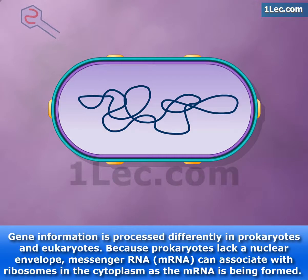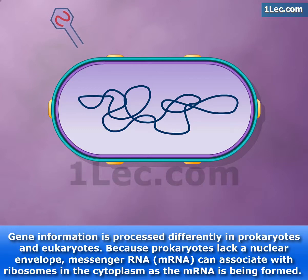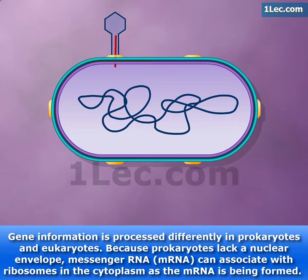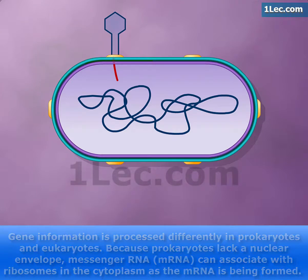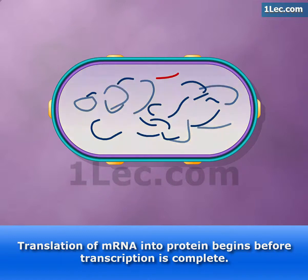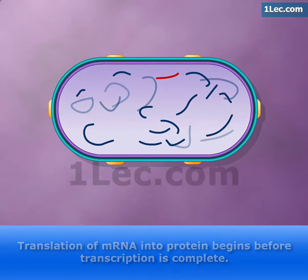In generalized transduction, a segment of DNA is carried from one bacterial cell to another by a bacterial virus called a bacteriophage, or phage. The phage attaches to the bacterial cell and injects its nucleic acid into the host cell. A phage enzyme is produced that breaks down the host DNA into smaller fragments.